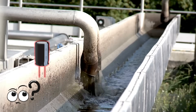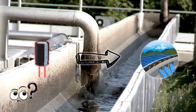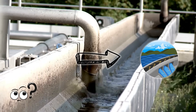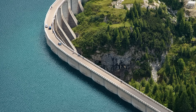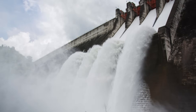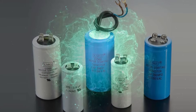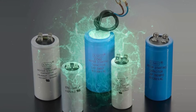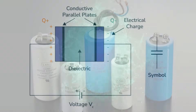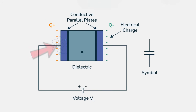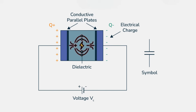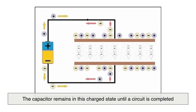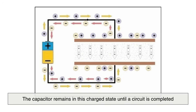To understand how a capacitor works, imagine a water reservoir with an inlet and an outlet. The reservoir stores water when it's not being used, and when demand arises, it releases the stored water quickly. A capacitor works in a similar way, but with electric charge instead of water. When connected to a power source, electrons accumulate on one plate, while the other plate loses electrons, creating an electric field between them. The capacitor remains in this charged state until a circuit is completed.